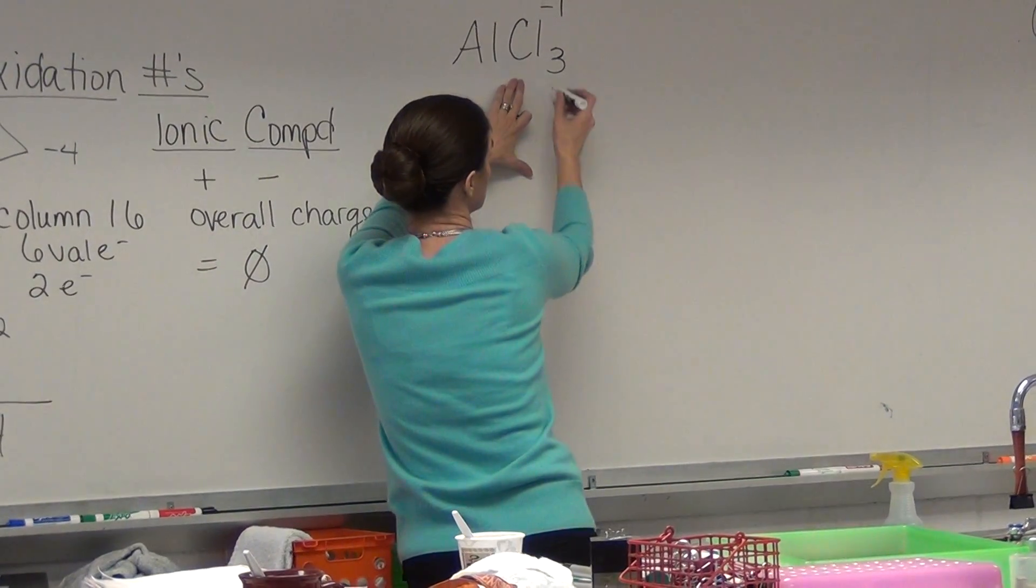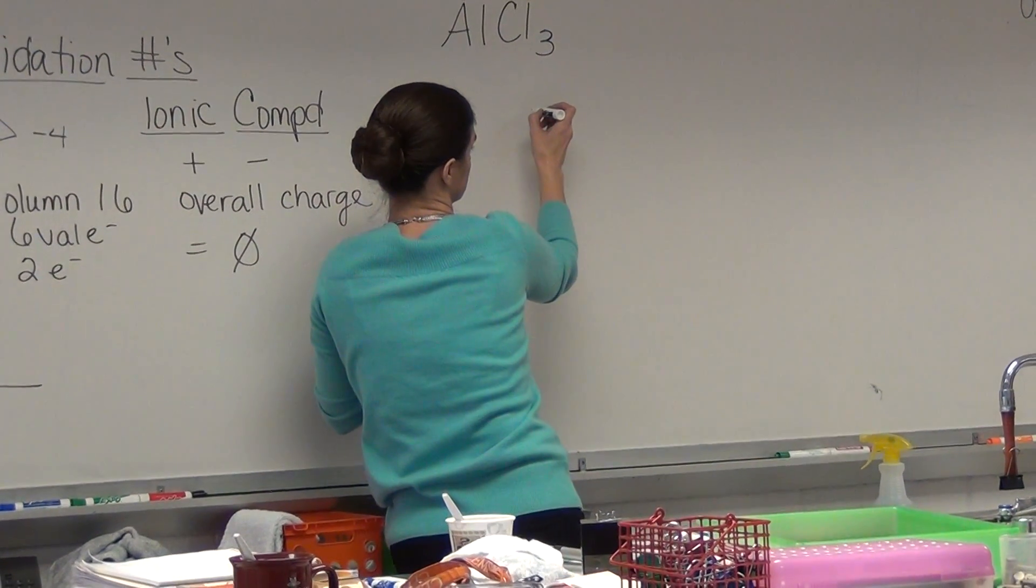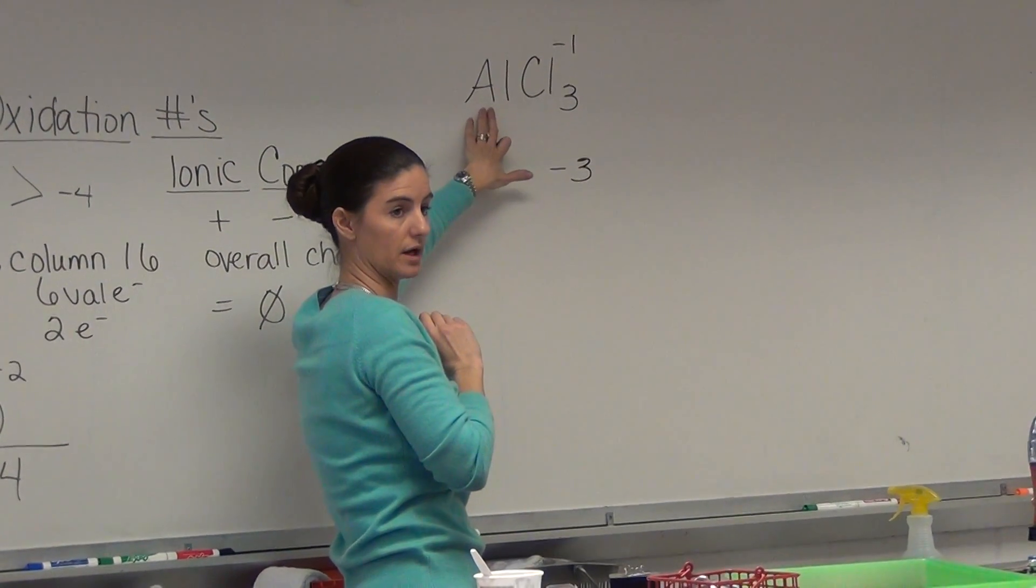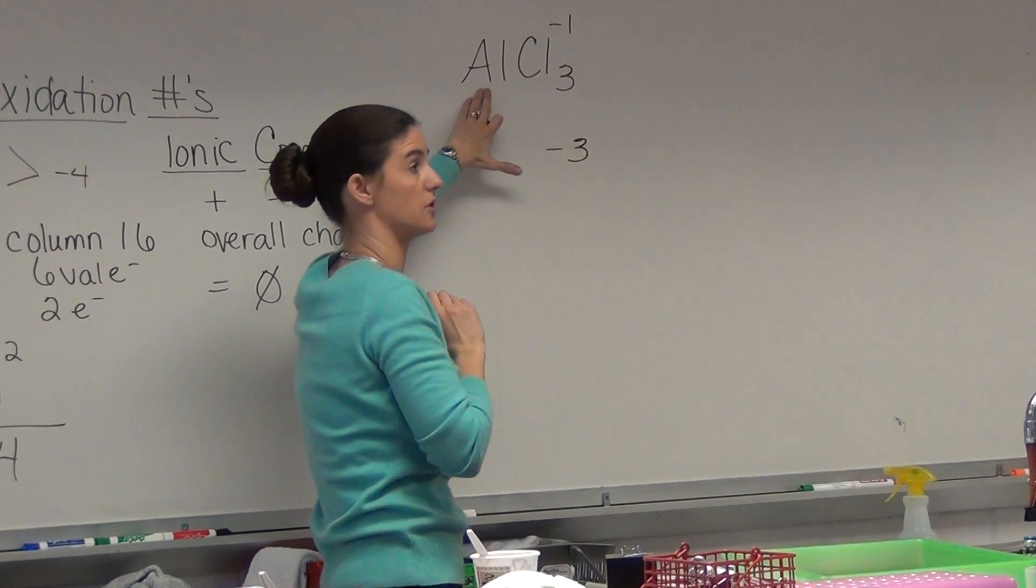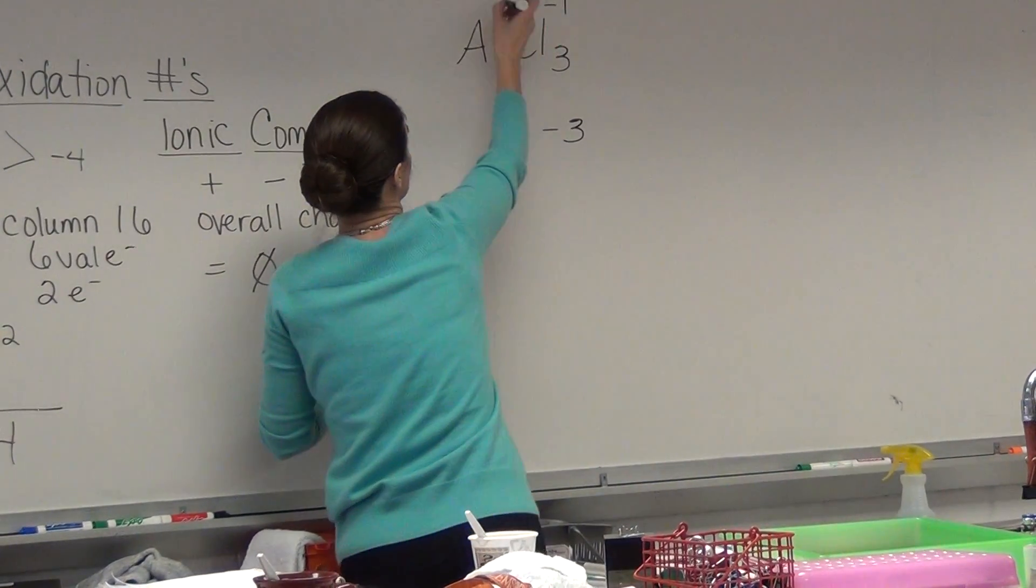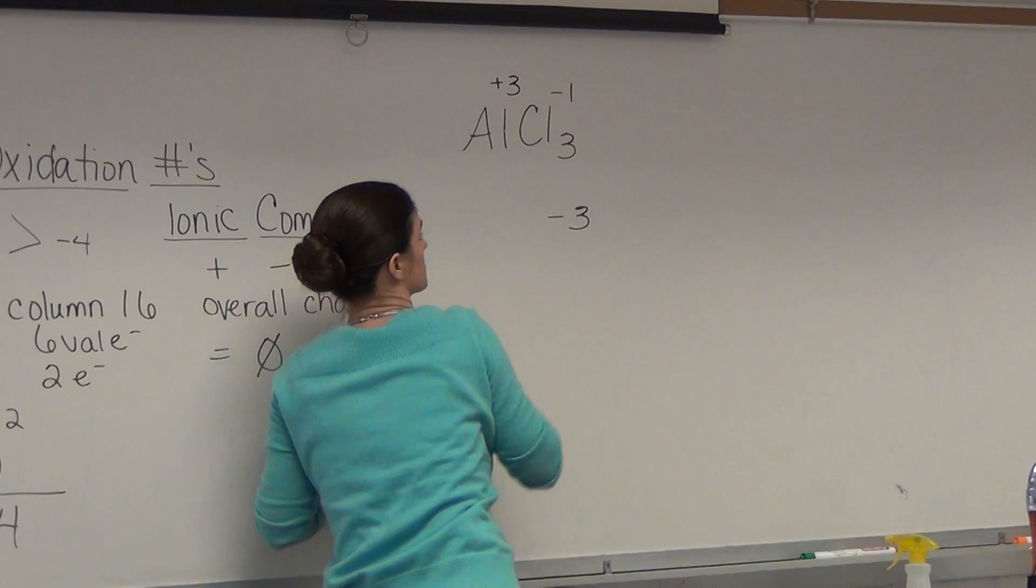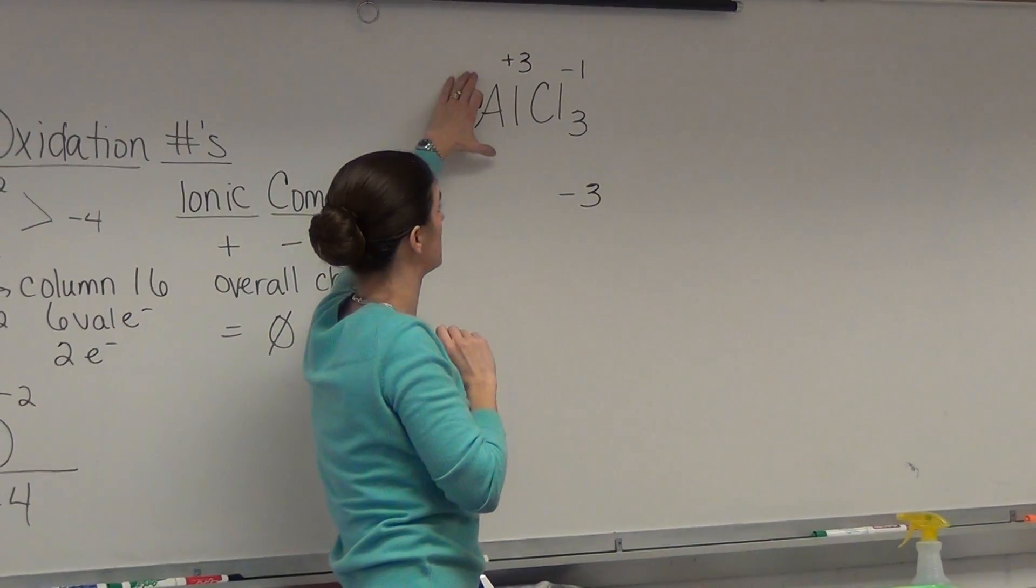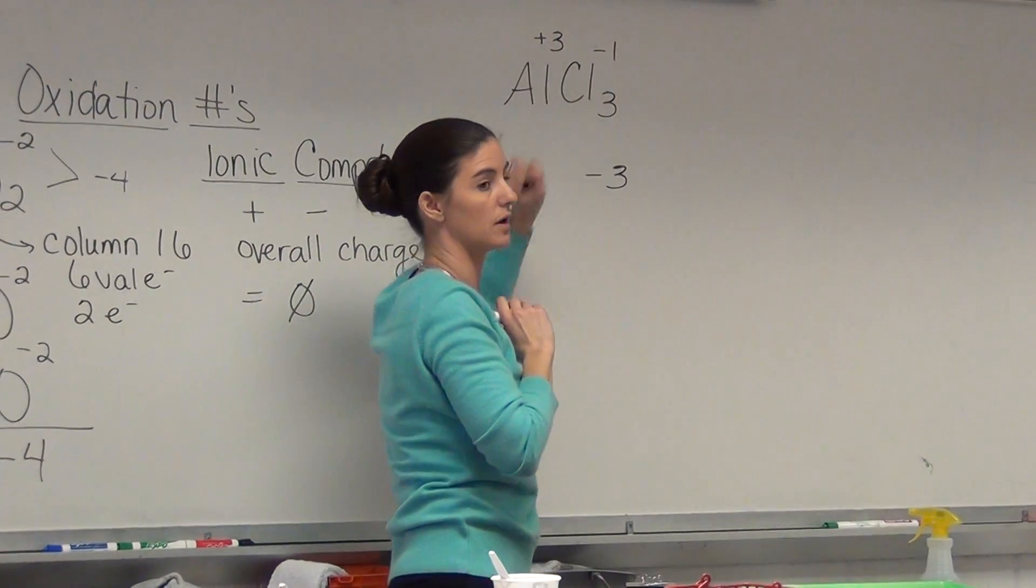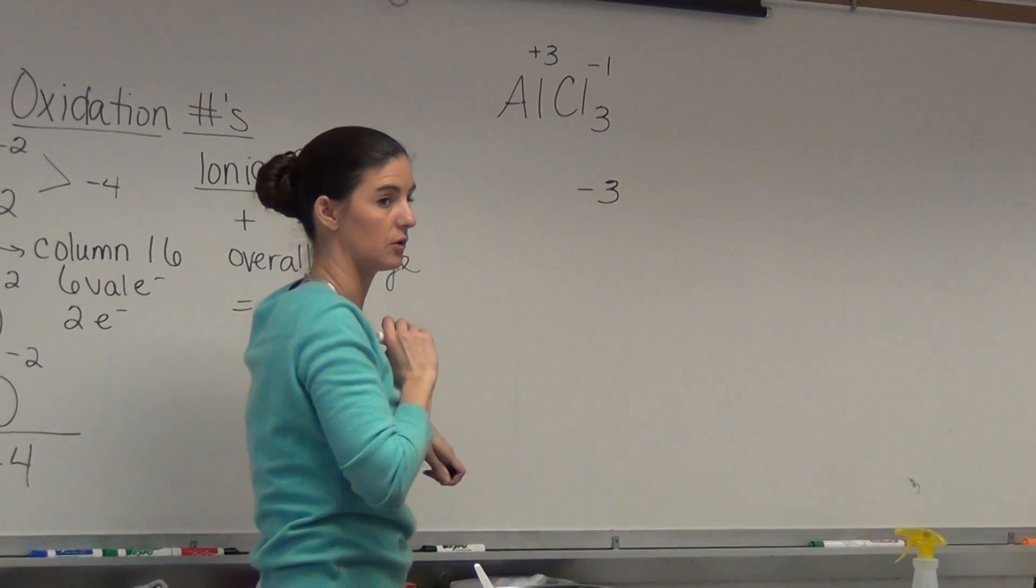What's our total negative charge? Aluminum, there's only one of them. So the one aluminum has to have a plus three. So these are our oxidation numbers: Al plus three, chlorine minus one. Any questions?